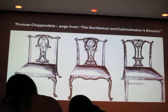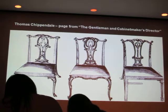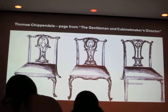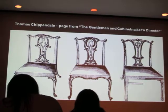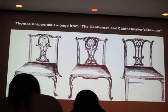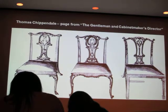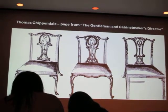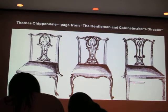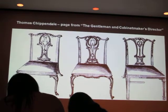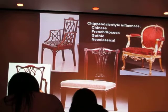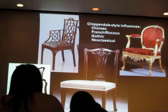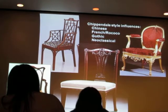One is French, which is Rococo. One is Chinese. One is Gothic. And the last one is Neoclassical. Depending on which influence it is — this is French influence or Rococo, this is Neoclassical, this is sort of Chinese. Here's Chinese. Here's Gothic. Here's Neoclassical. Here's French.